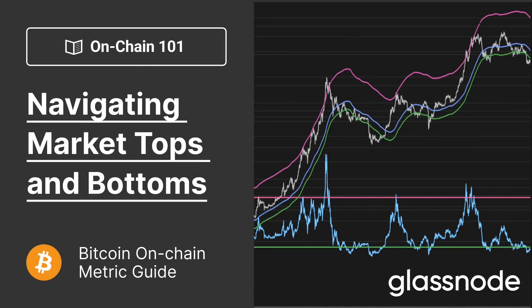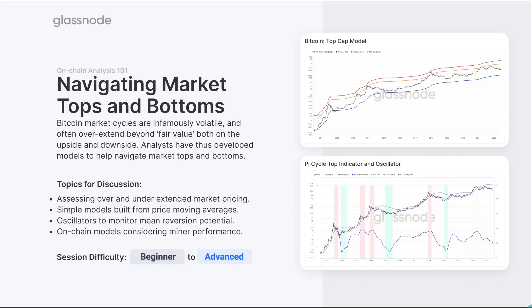Welcome to this Glassnode note on Chain 101, where we're looking at the navigation of market tops and bottoms. What we're trying to do is assess Bitcoin's natural volatility — we generally see over-extensions both to the upside and the downside — and assess what confluence looks like: when do we see a number of models telling us a similar story, historically signaling overheated or undervalued markets.